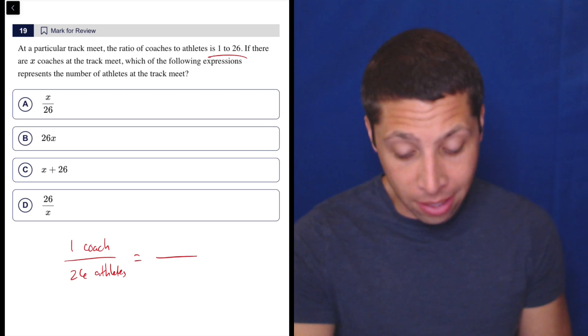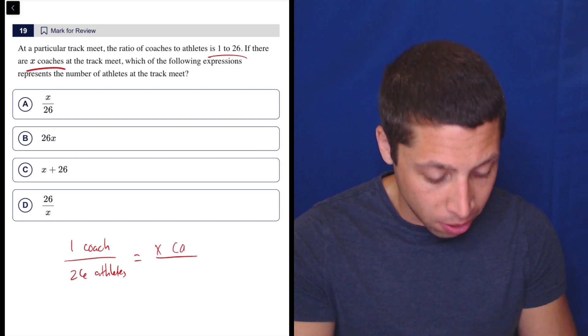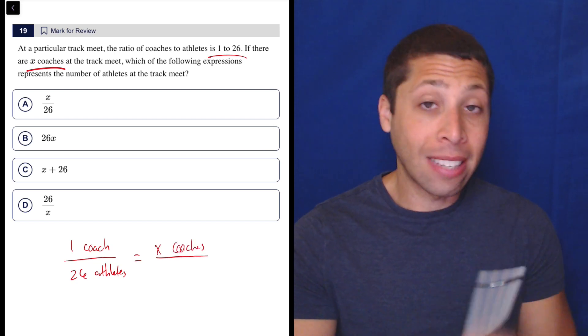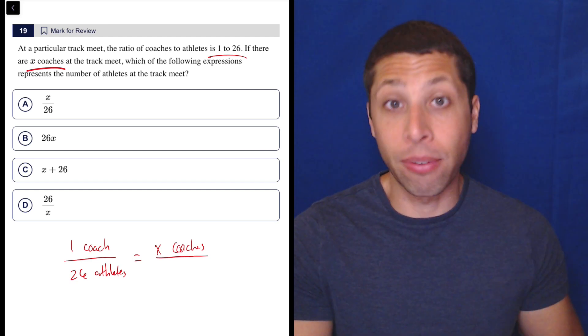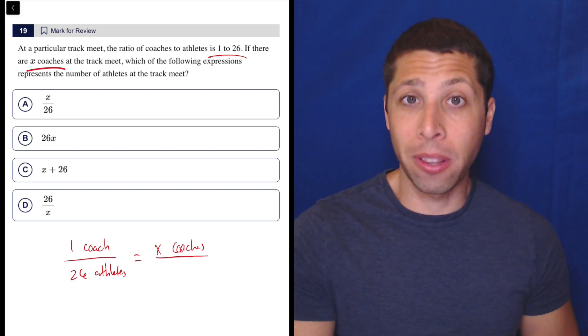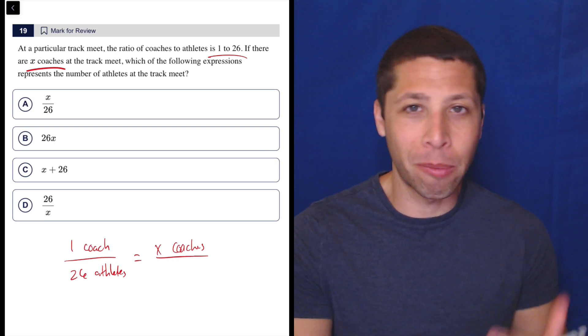They said if there are X coaches, so we could put X coaches on the top here. And that's the key is when we do set up a proportion where we have these two fractions equal to each other, the most important thing to keep track of is the units. So it may seem kind of silly that I'm writing coaches and athletes, but I'm doing it for good habits.